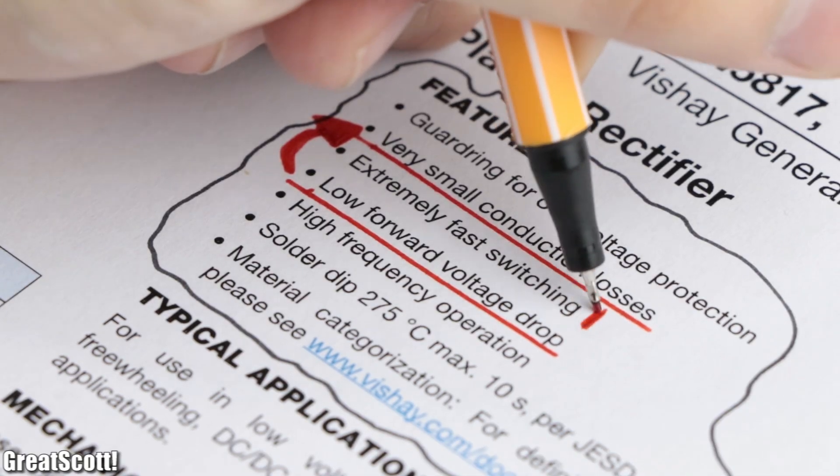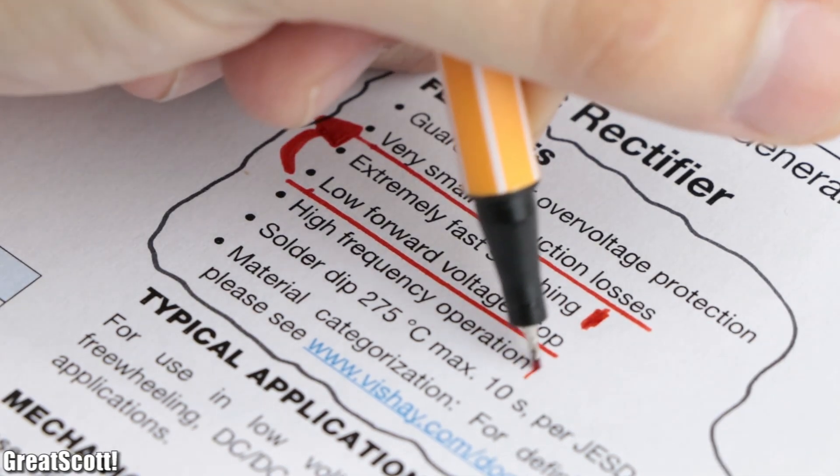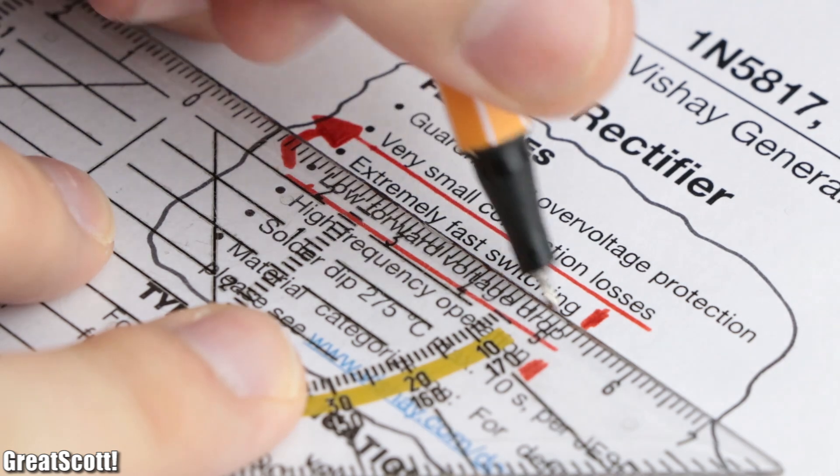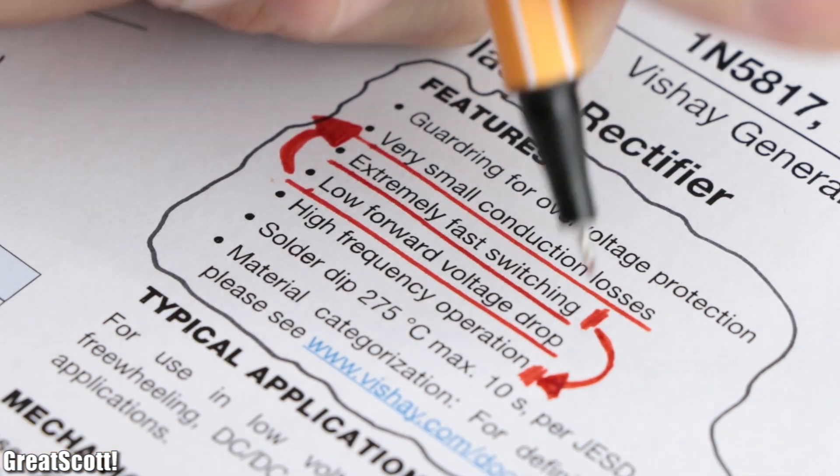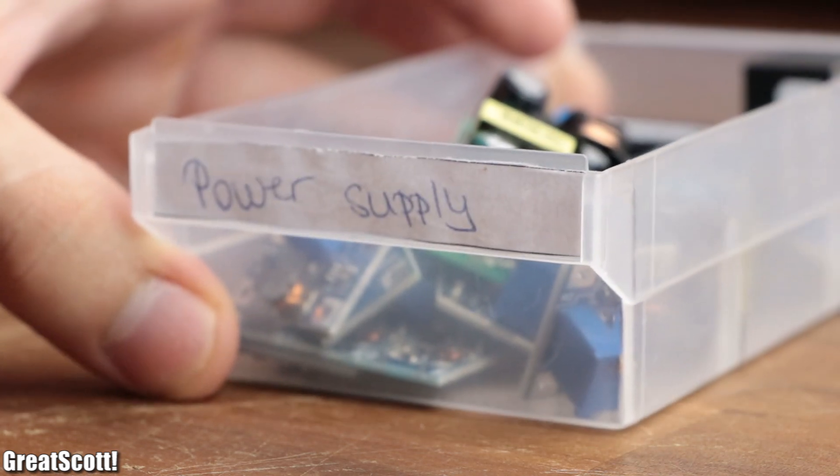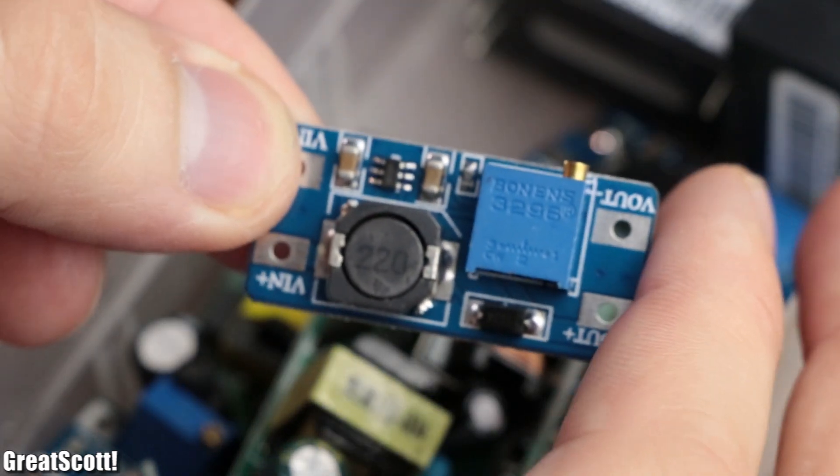But there is a second big advantage, which the datasheet once again divides into two, which are extremely fast switching speeds and thus high frequency operations. To get a more practical feeling for this aspect, we can have a look at a boost converter.